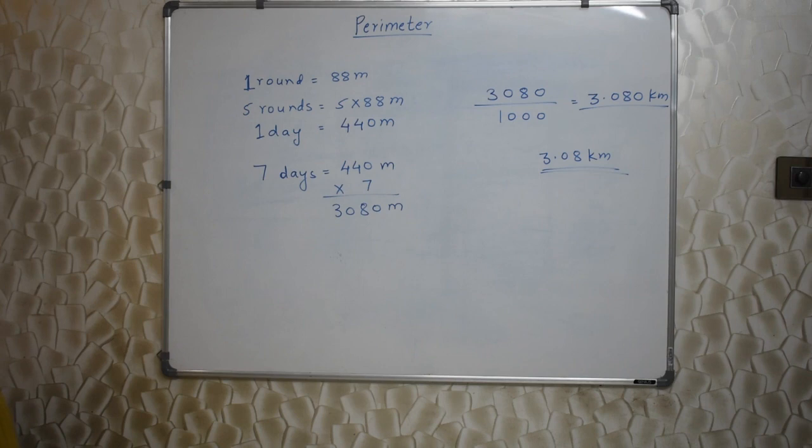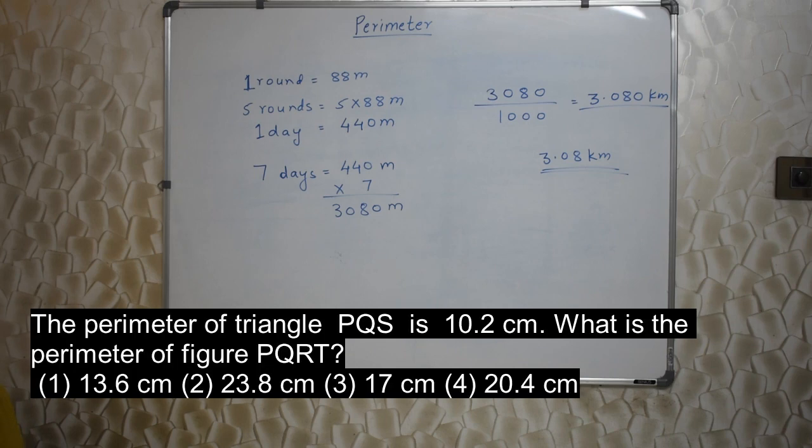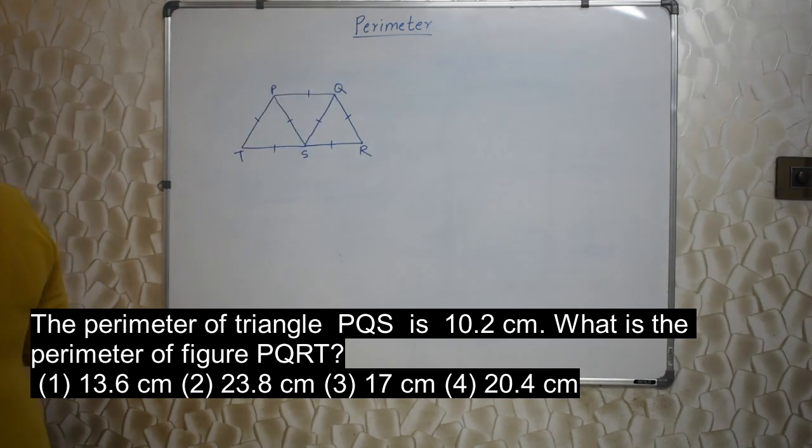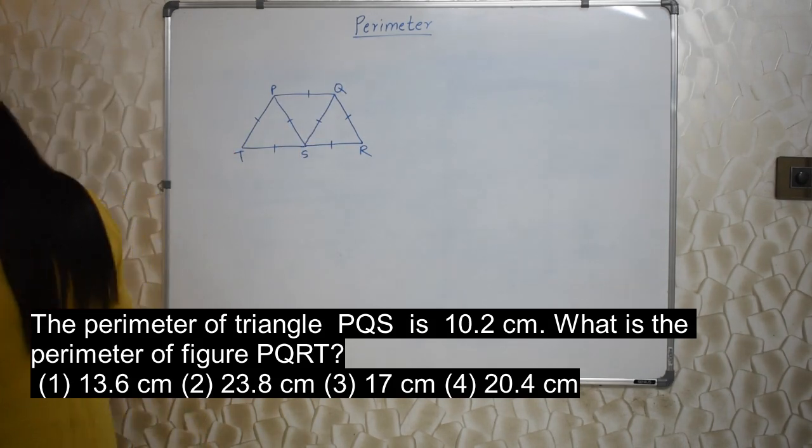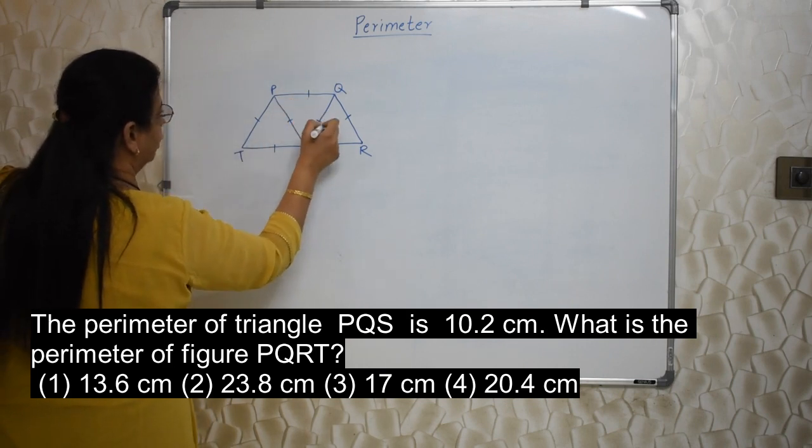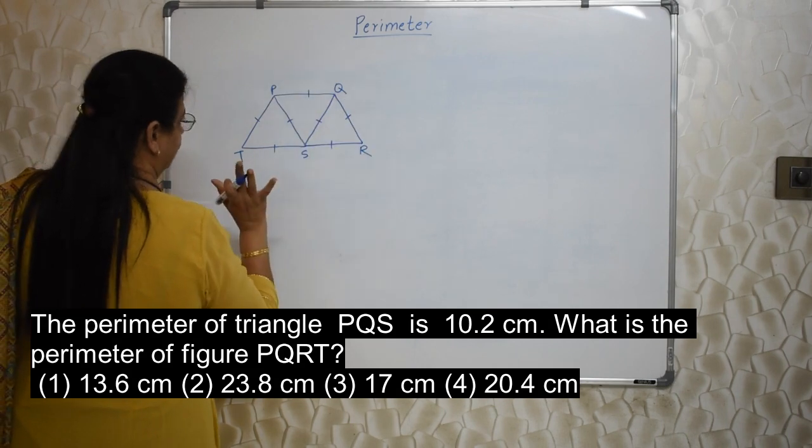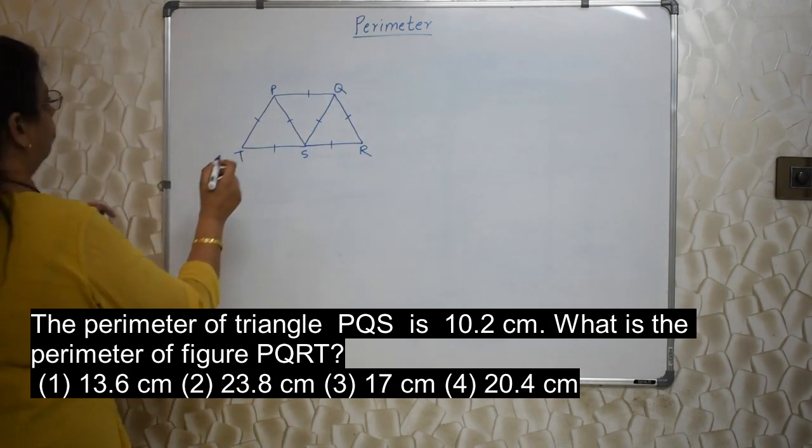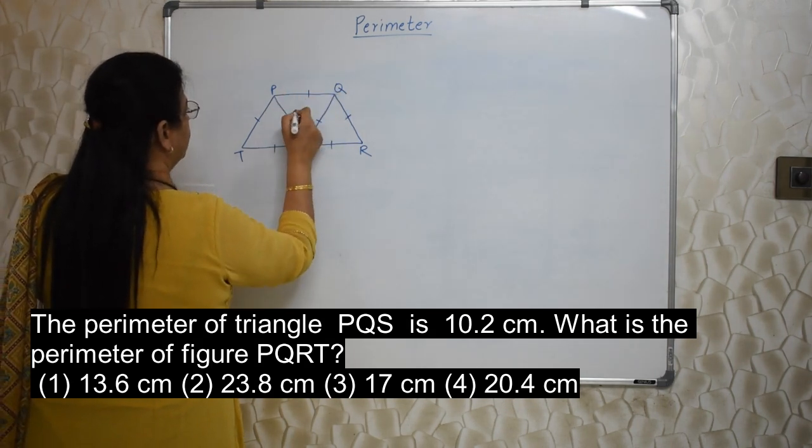Next sum will appear on your screen. The perimeter of triangle PQS is 10.2 centimeter. What is the perimeter of PQRT? Students, I have drawn this figure here. What are they saying? Perimeter of PQS is 10.2. P, Q, S. This triangle is 10.2. Perimeter means sum of all the sides. Now they have indicated this small, small lines here. Means all these portions are of equal size or equal length.